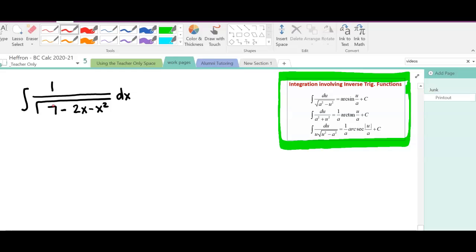I can see then that this looks like we are in the form of arc sine. So I'm going to try to complete the square in the denominator, and I'm going to rewrite this as 1 over the square root. I'm going to leave that 7 there, but I'm going to start moving these next terms around. I'm going to put the x squared first, and then the 2x next.